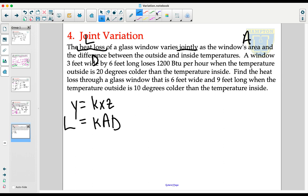Our next sentence of the problem gives us all of the information that we need. A window three feet wide by six feet long loses 1,200 BTU per hour when the temperature outside is 20 degrees colder than the temperature inside.